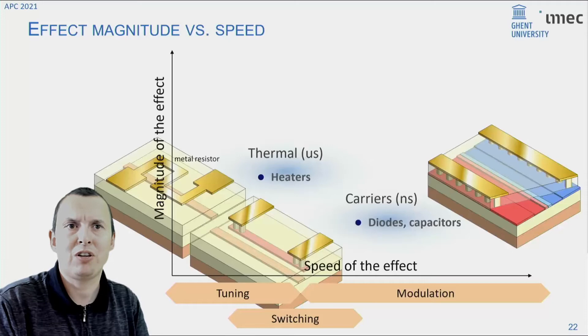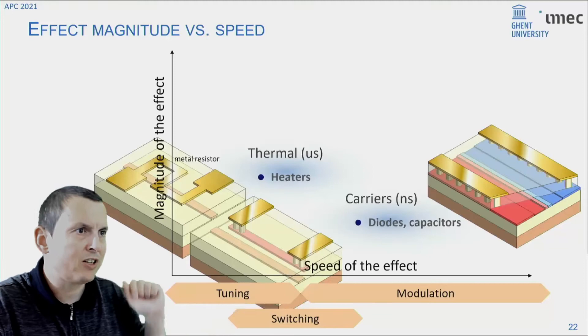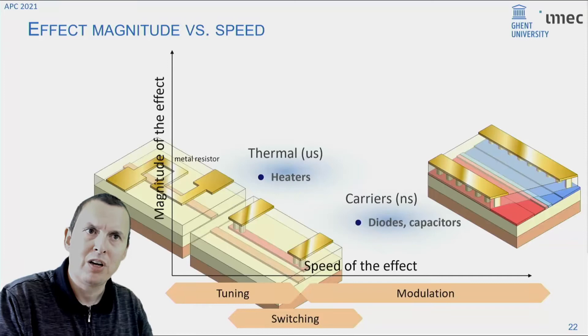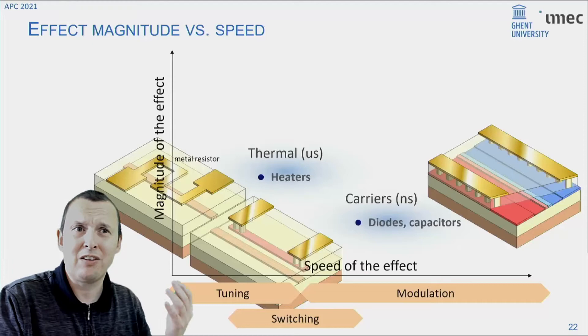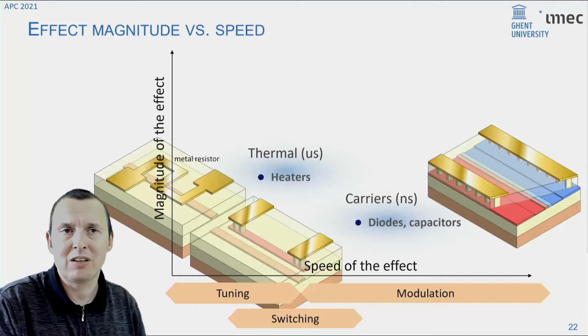Now in such a platform, the most commonly used way to implement a phase shifter or an actuator is using a heater, where you essentially put a resistor close to your waveguide, either on top or on the side of your waveguide, you send a current through it, you heat it up, and you induce a phase shift. And this works really well, but it consumes a constant power of multiple milliwatts, up to tens of milliwatts for each heater to induce a pi phase shift. That's not scalable to really large numbers.